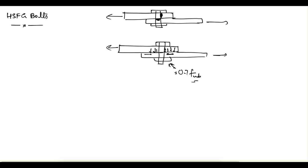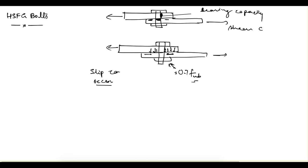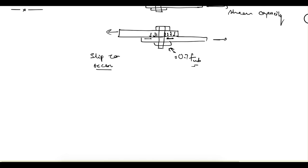There are two types of cases. If slip can occur in an HSFG bolt, then it will essentially behave like a bearing bolt — friction will be present but bearing stresses in the bolt will also occur. For that case, we will have to check the design for bearing capacity and shear capacity as well, depending on conditions. Let's see in detail how the code has specified this.